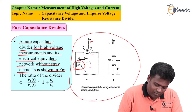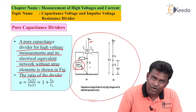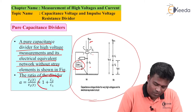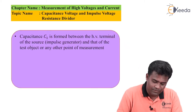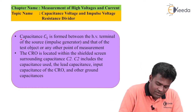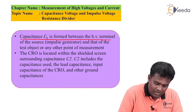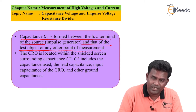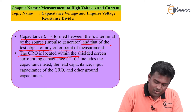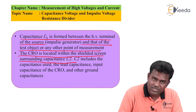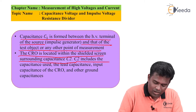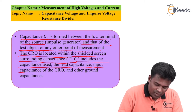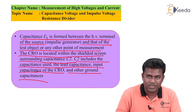The output form, which is independent of frequency, can be obtained on the CRO. The ratio can be given as alpha = V1(t)/V2(t) = 1 + C2/C1. Capacitance C1 is formed between the HV terminal of the source and that of the test object or any other point of measurement. The CRO is located within the shielded screen surrounding capacitance C2. C2 includes the capacitance used, the lead capacitance, input capacitance of the CRO, and other ground capacitances.